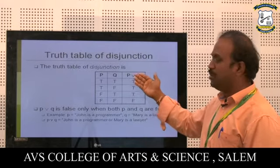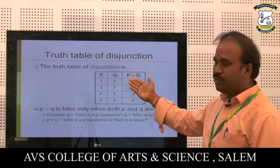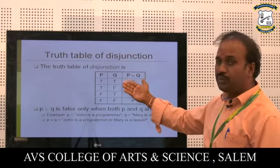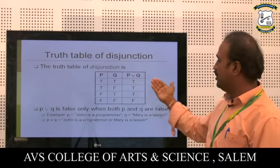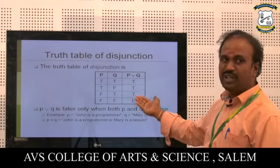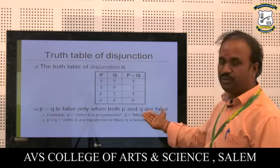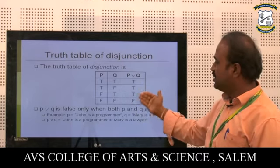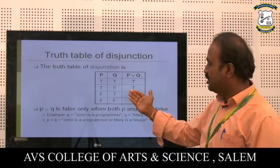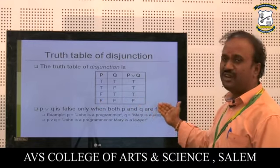Truth table for disjunction: For P and Q statements — True and True gives True. True and False gives True. False and True gives True. False and False gives False. P or Q is false only when both P and Q are false.